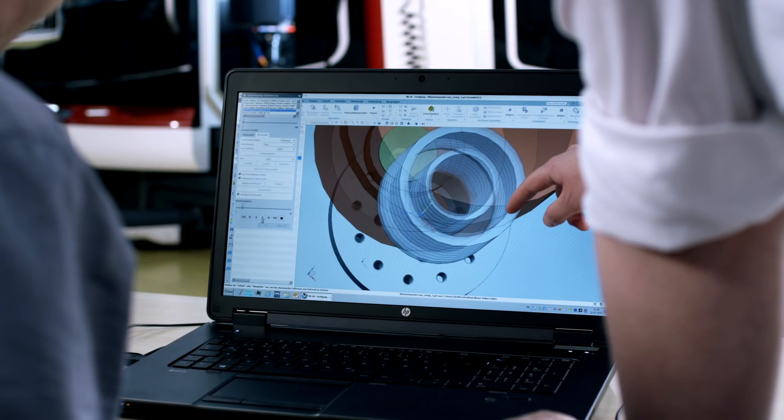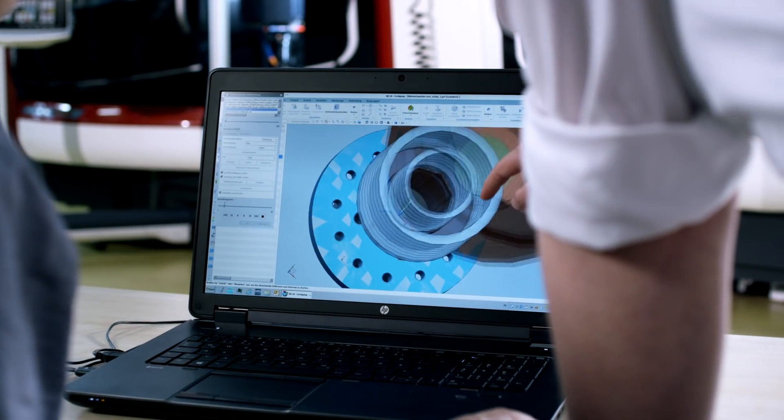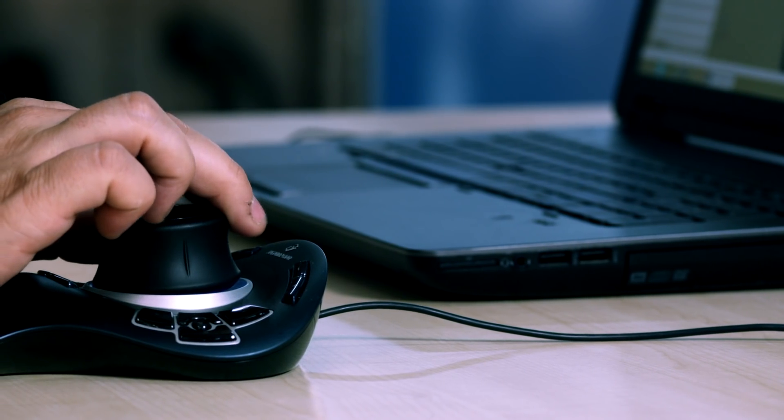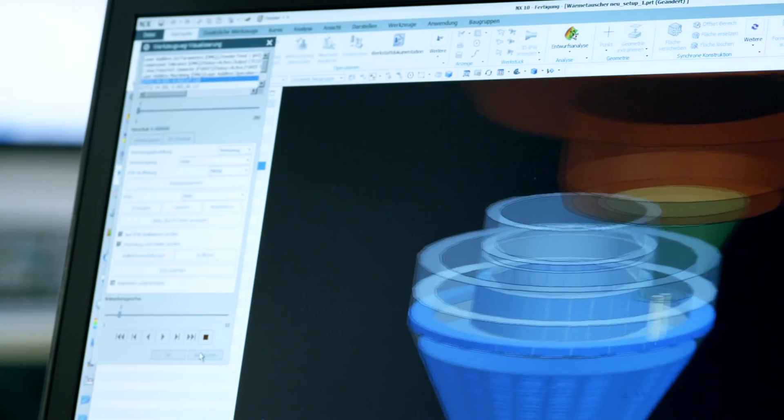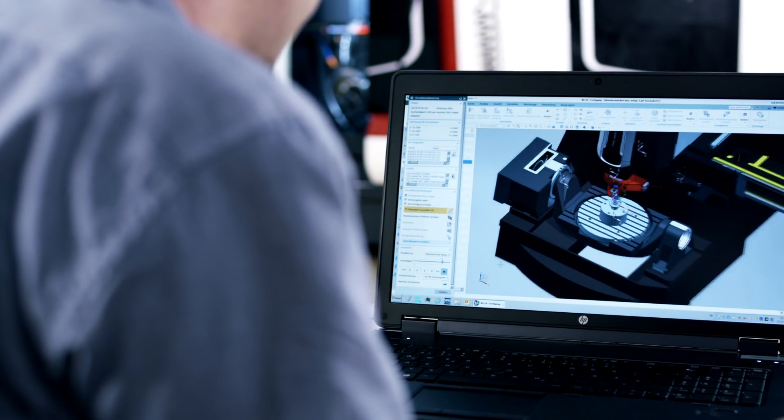In general, we start from a 3D CAD model. In this context, it is favorable to use a software solution from the design phase to programming through to production. Only with Siemens NX are we able to prepare the data accordingly for the additive and ablative processes.